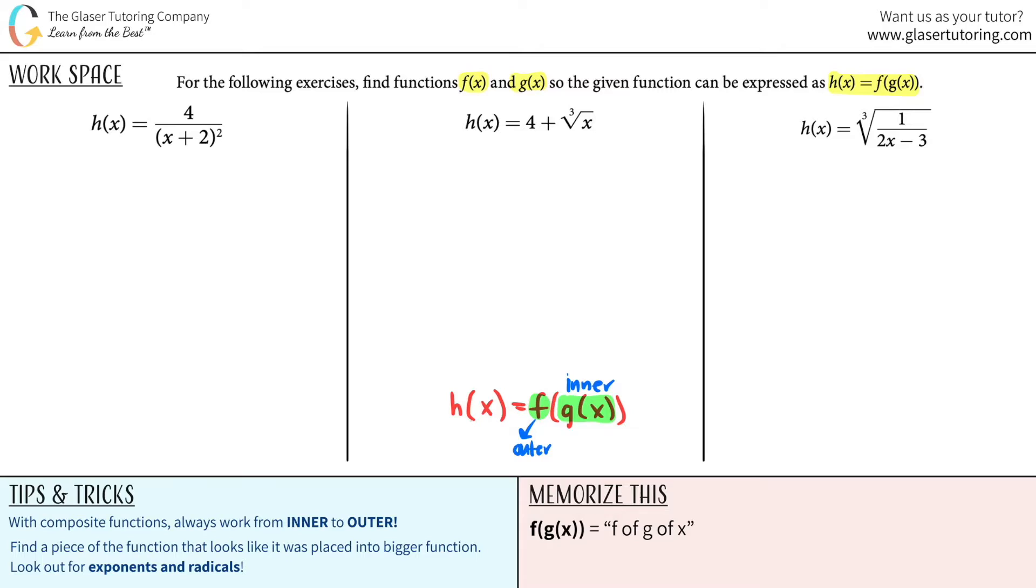So for the first one, I have to find out what f of x was and what g of x was. Always work from inner to outer and make sure that you can decipher what is inside, keyword inside, something else. So for here, it was 4 divided by x plus 2 squared. Hmm, it looks like this x plus 2 is surrounded by these parentheses raised to the second.